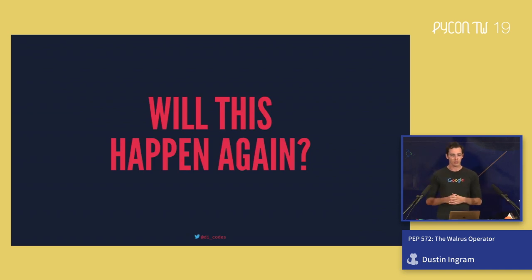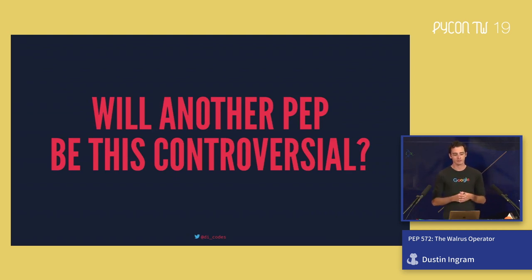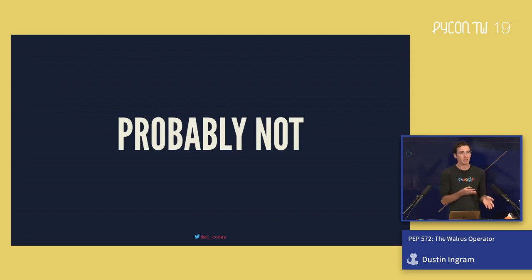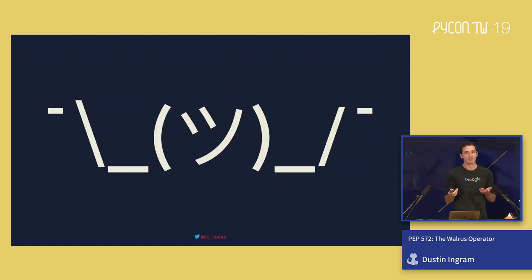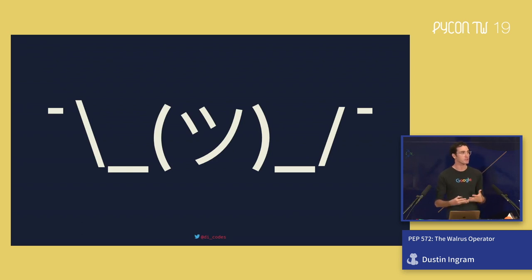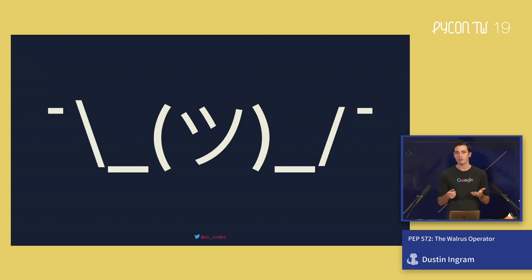Will this happen again? Will another PEP be this controversial? Probably not — this PEP was an outlier: a small, obvious syntax change that caused a really strong reaction. But will people be negative on the internet? I don't know. I hope we've learned a lesson as a Python community — we should all be a little nicer to each other, especially when people are proposing new ideas. So many people use Python now, and for most of them the language already feels perfect and they don't want to change anything. Maybe this is the new status quo — I sure hope not.